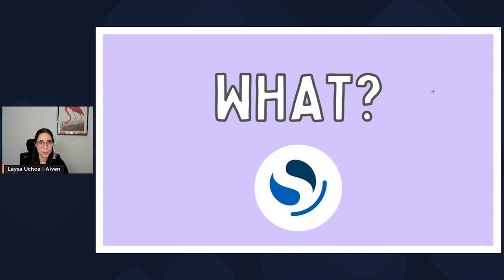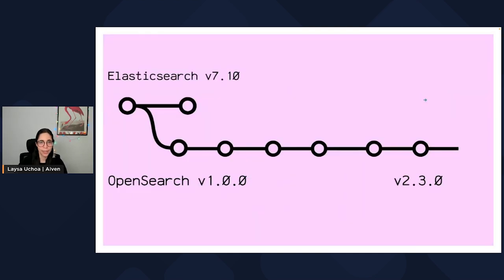So what is OpenSearch? OpenSearch is a direct fork of Elasticsearch version 7.10. I believe right now OpenSearch is already in version 2.3.0. It's been more than one year old as a project and these have become quite different projects right now.